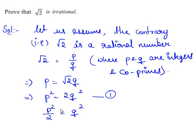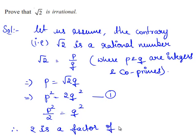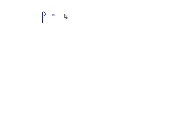From this we understand that 2 divides p squared, which also implies that 2 divides p. Therefore, 2 is a factor of p.